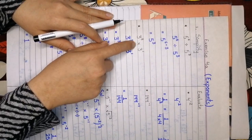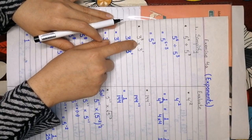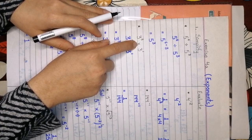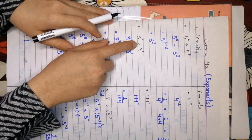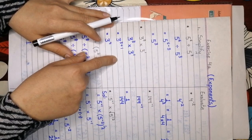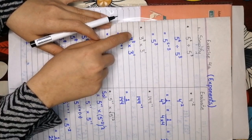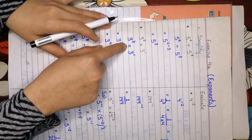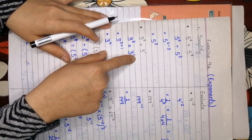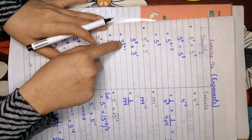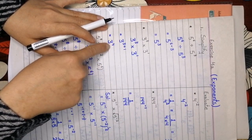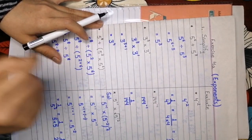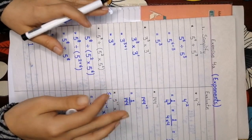Now look here — what we have in between is a multiplication sign, so which law can we apply? We can apply product law here. What is product law? When we have the same base and a multiplication sign in between, we will add the powers. When we add the powers we get 4. These questions are very easy — you just have to remember the laws.